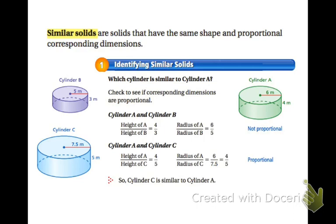In the first example in your textbook, they're wanting to know which cylinder is similar to cylinder A. They give you the dimensions, the radius and the height, and then you can find similar B and C on the side. When you're comparing A to B, you have the height of A over the height of B as 4 over 3, and then the radius of A and the radius of B, 6 over 5. You can see that these two do not simplify and are not proportional. But when you look at cylinder A and cylinder C, the height of A is 4, the height of C is 5.